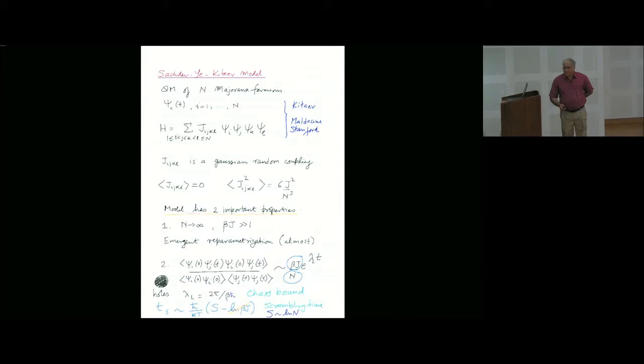The second point is that if you compute some out-of-time ordered correlators, there's a growing exponent with a very specific coefficient. This exponent is the Lyapunov chaos bound. This type of model saturates this bound, but of course there are corrections of order one upon J beta at higher orders.